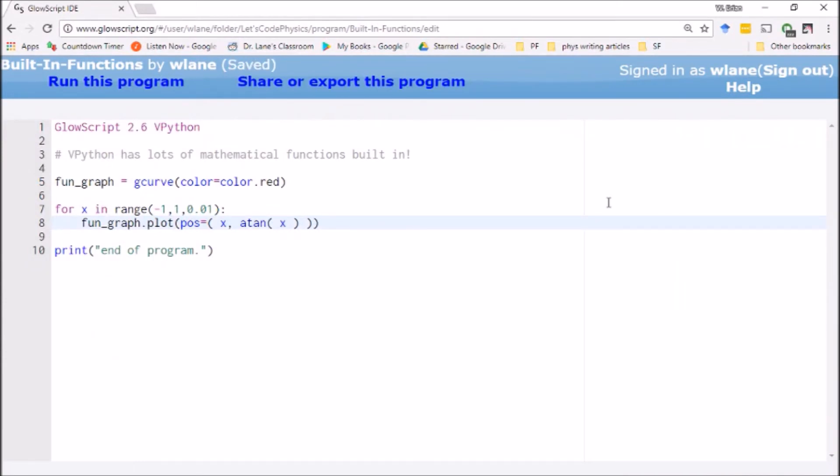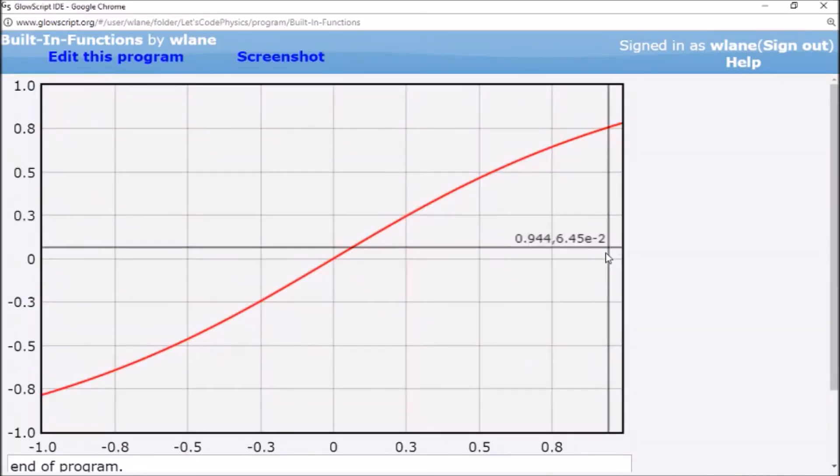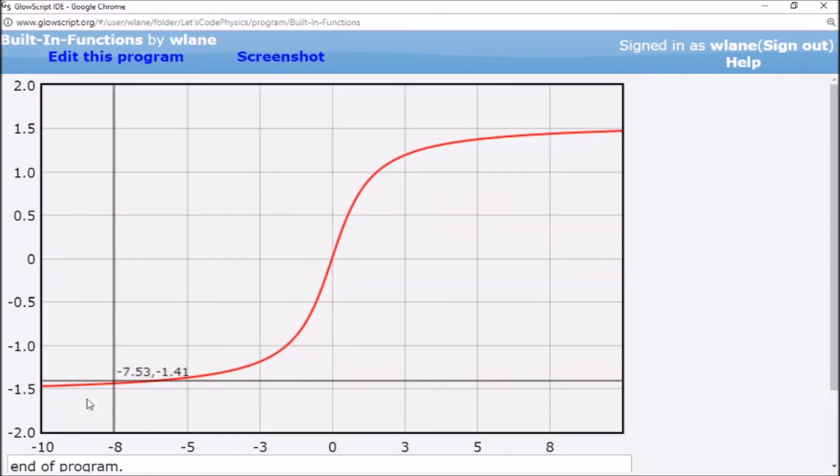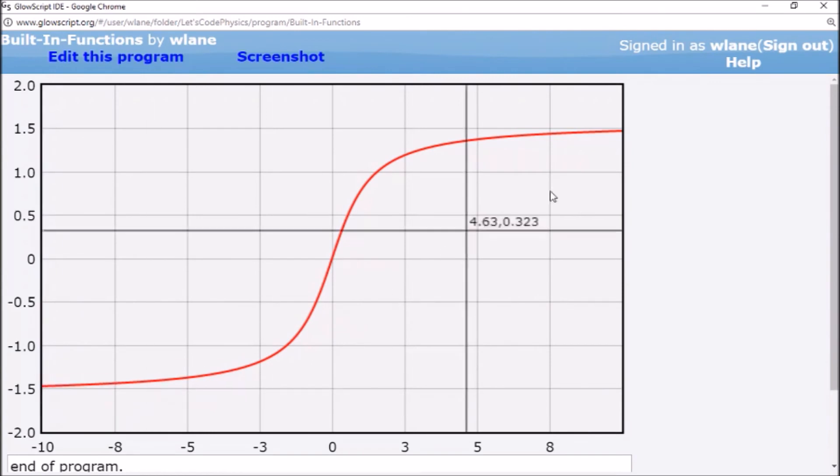It'll also do arctangent for you. It'll give you the angle whose tangent is whatever the thing is you're looking for. Of course, arctangent doesn't have that domain restriction. I can go out as far as I want with the arctangent because it's going to approach negative pi over 2 and pi over 2 in a horizontal asymptote.